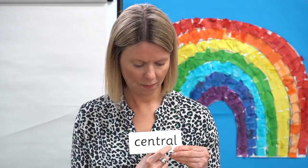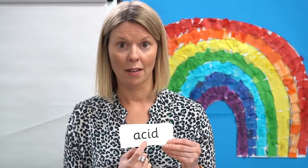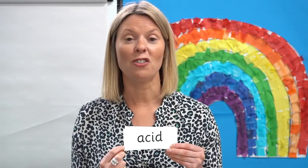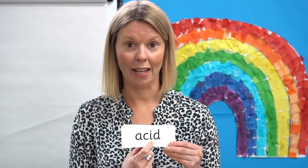Let's read some words with graphemes we already know. Have a look at this word — remember, in this word this letter says S. Read each sound as I point. Now blend and read the word. Central. Something that is in the middle is central. Have a look at this one — remember, in this word it says S. Read each sound as I point. Now blend and read the word. A-s-i-d. Acid.